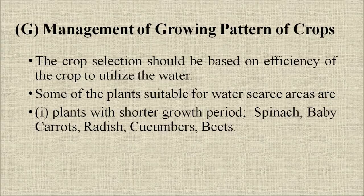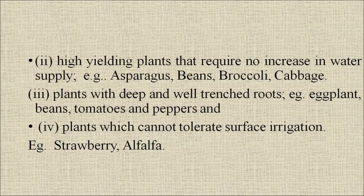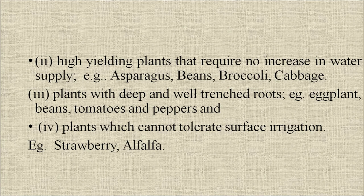Management of growing patterns of crops: crop selection should be based on the efficiency of the crop to utilize water. Some plants suitable for water-scarce areas include: first, plants with shorter growth periods like spinach, baby corn, radish, cucumber and beets; second, high-yielding plants that require no increase in water supply like asparagus, beans, broccoli and cabbage; third, plants with deep and well-branched roots like eggplant, beans, tomato and peppers; and lastly, plants which cannot tolerate surface irrigation like strawberry and alfalfa.